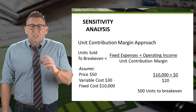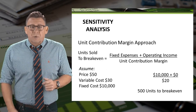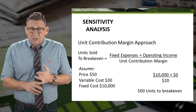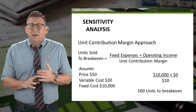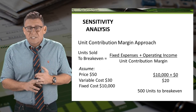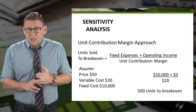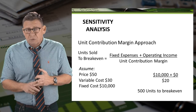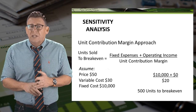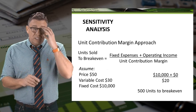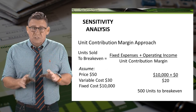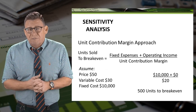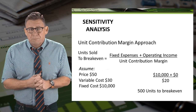So let's assume the following. Price is $50, variable cost is $30, therefore contribution margin is $20. Fixed costs are $10,000, so our breakeven is 500 units.